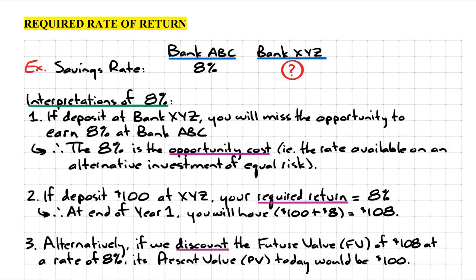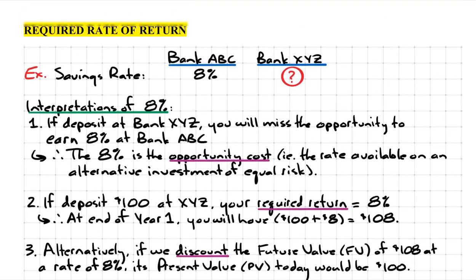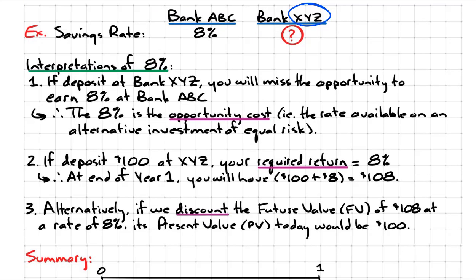Now let's look at the second interpretation of this 8%. If we indeed deposit our money at XYZ—suppose we deposit $100 at XYZ—your required return would be 8%. Now where is this coming from?